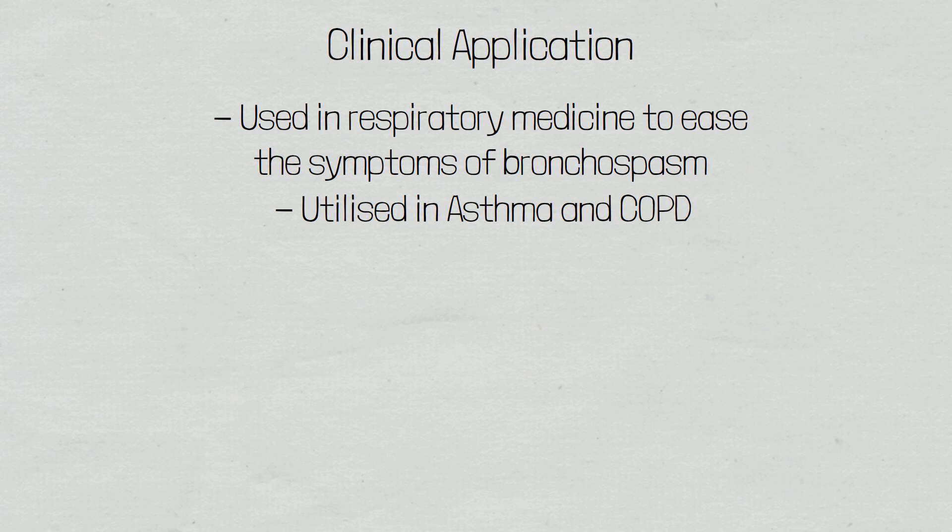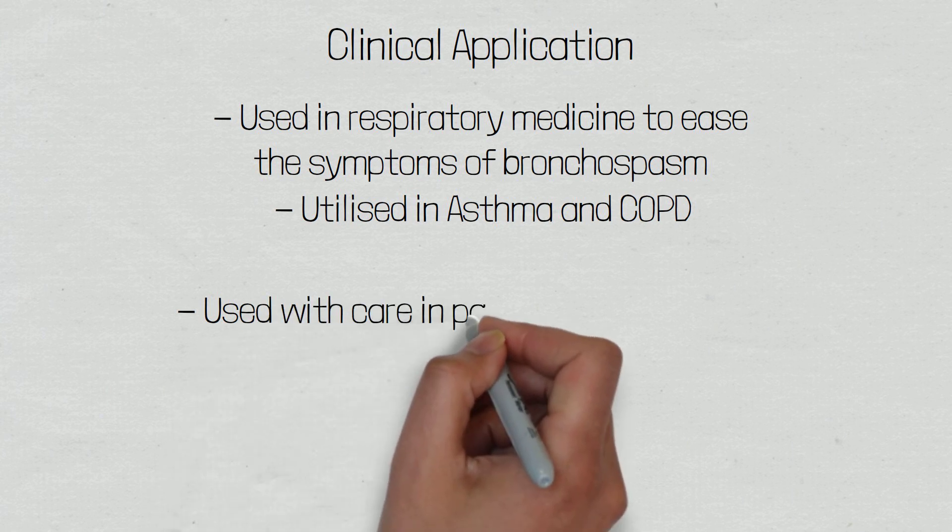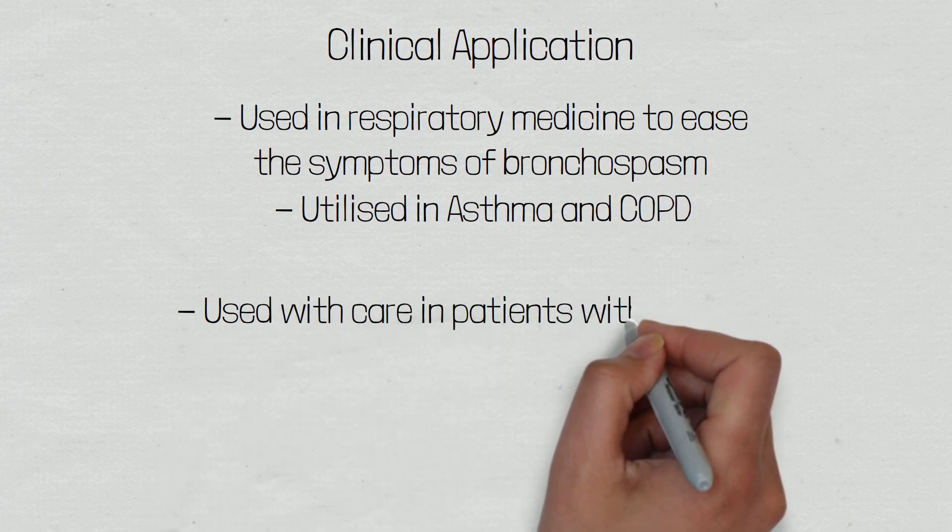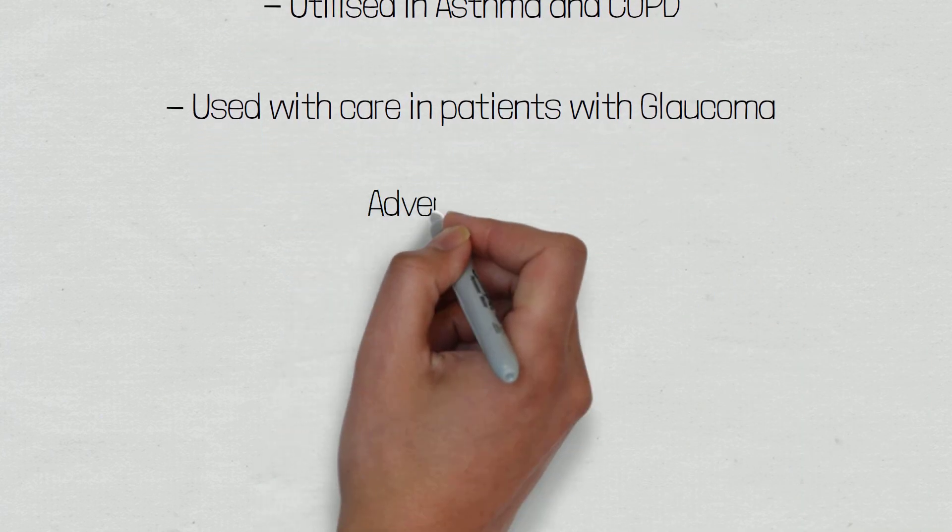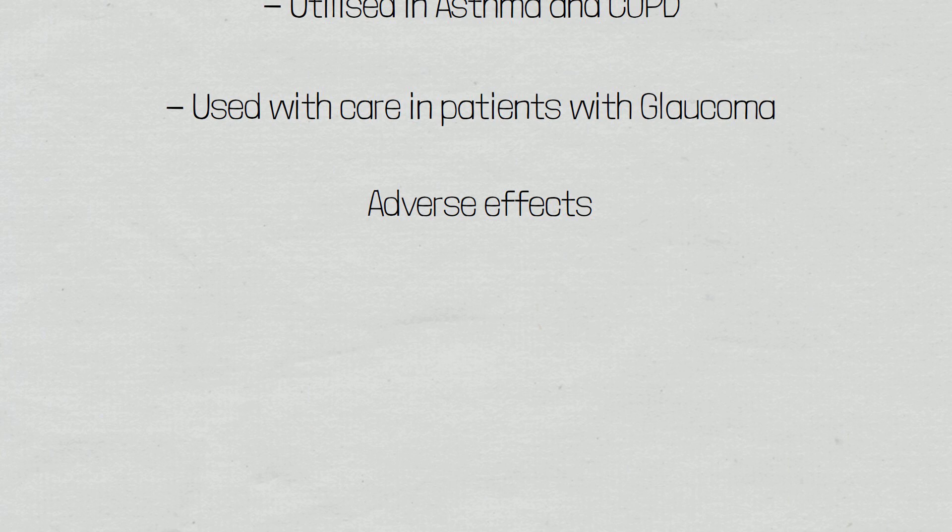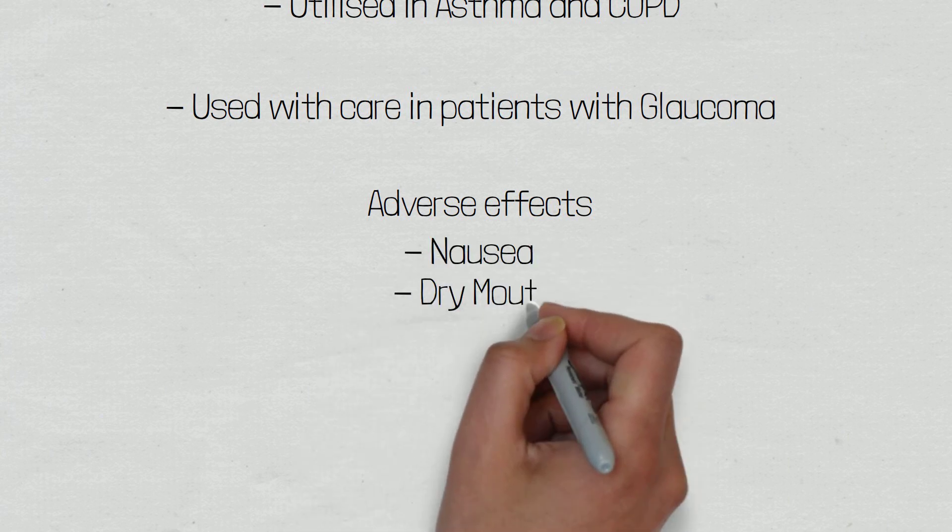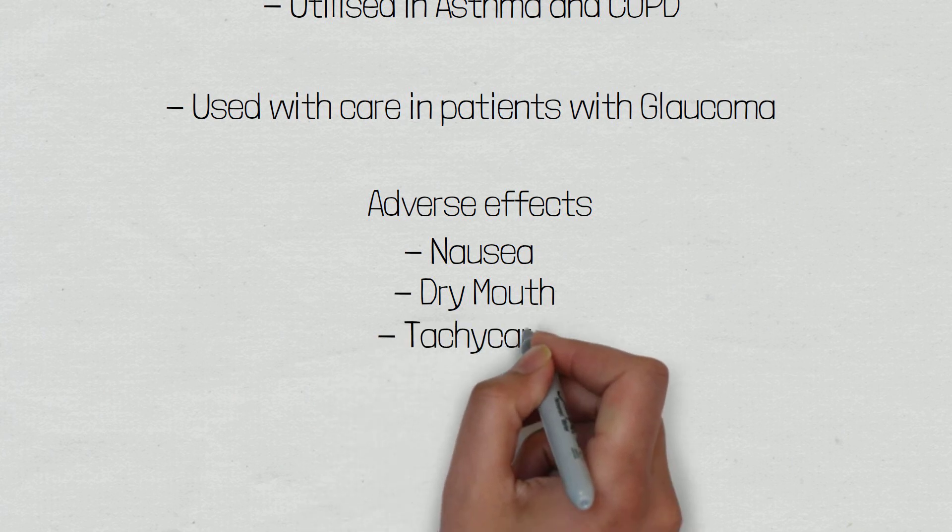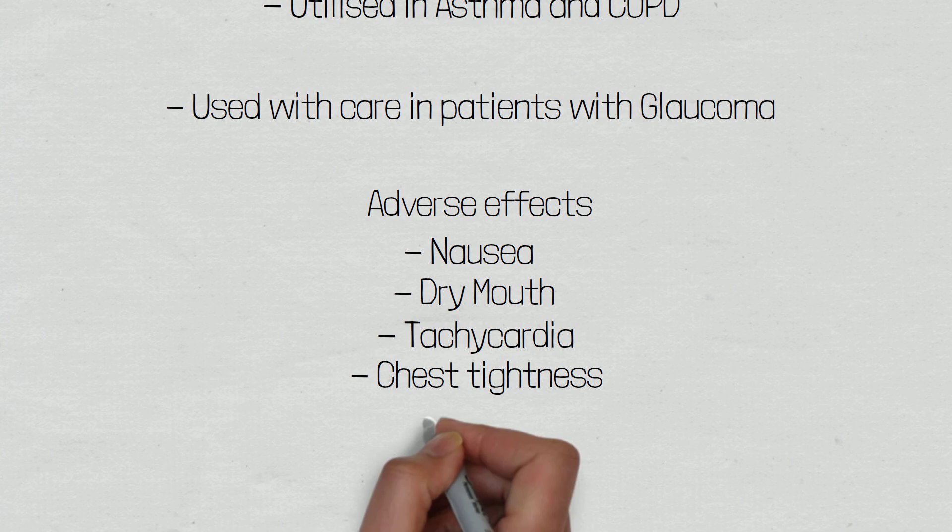Ipratropium bromide should be used cautiously in patients with closed-angle glaucoma as it can cause an increase in intraocular pressure. Adverse effects of ipratropium bromide include nausea, dry mouth, tachycardia, paroxysmal chest tightness, and cough.